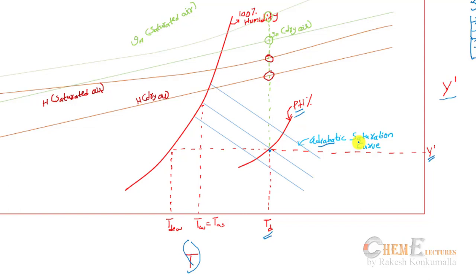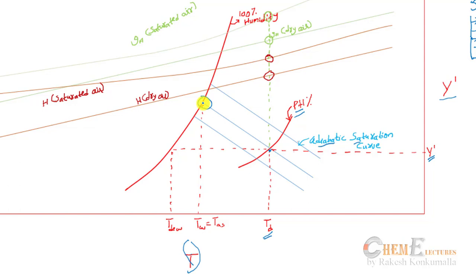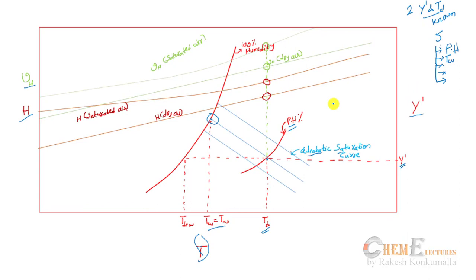These are the adiabatic saturation curve lines. As you have the point of intersection of T_d and Y', simply follow the adiabatic saturation curve until the 100% humidity — completely saturated. At complete saturation you get the adiabatic saturation temperature. For an air-water system, the adiabatic saturation temperature and wet bulb temperature are equal, so on the x-axis you get the wet bulb temperature.